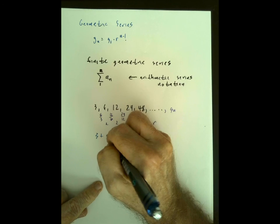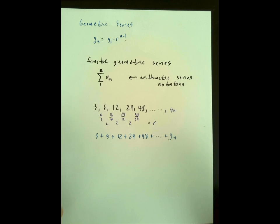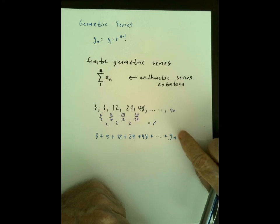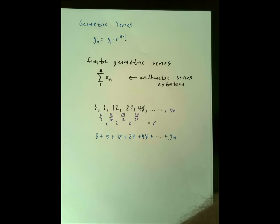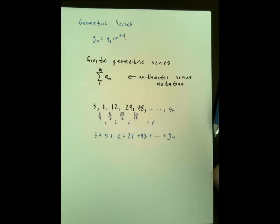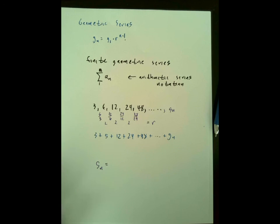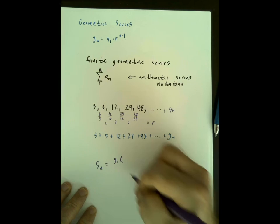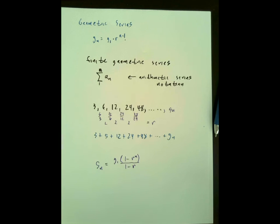The series that corresponds to that geometric sequence would be: 3 + 6 + 12 + 24 + 48 + ... up to the nth term. As long as this is a finite series with a set number of terms, there will always be a sum. The handy formula for the sum of a geometric series is: S-sub-n equals g1 times (1 minus r to the n) all over (1 minus r).